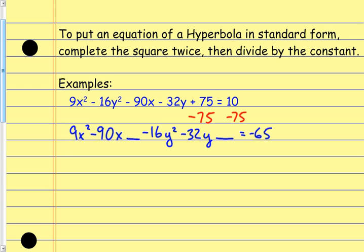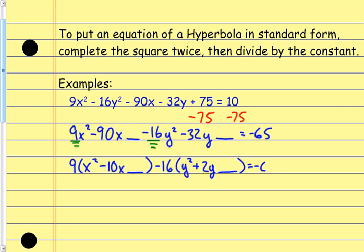From here I can't complete the square as written, because in order to complete the square I have to have a 1 in front of my squared terms. Right now I have a 9 and a negative 16, so I need to factor those out. Factoring the 9 out gives me 9(x² − 10x) with a space. Factoring out the negative 16 gives me −16(y² + 2y) with a space.